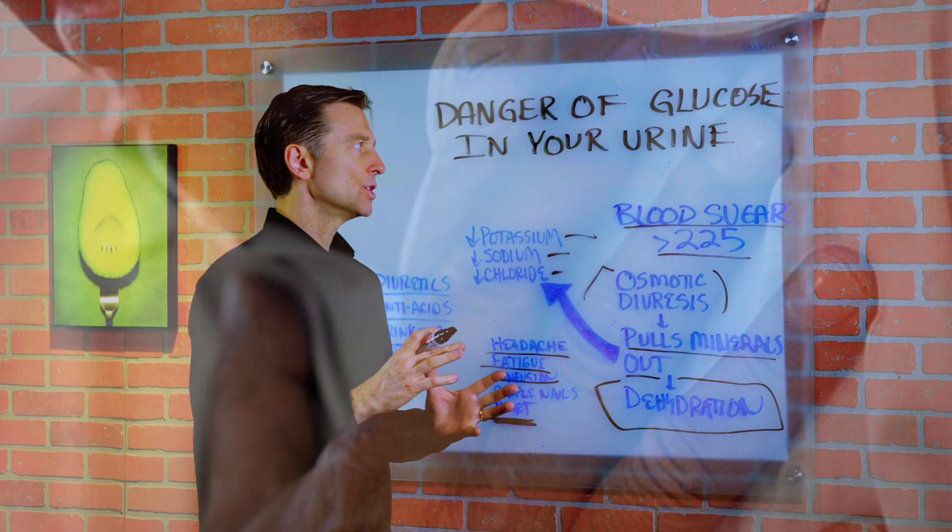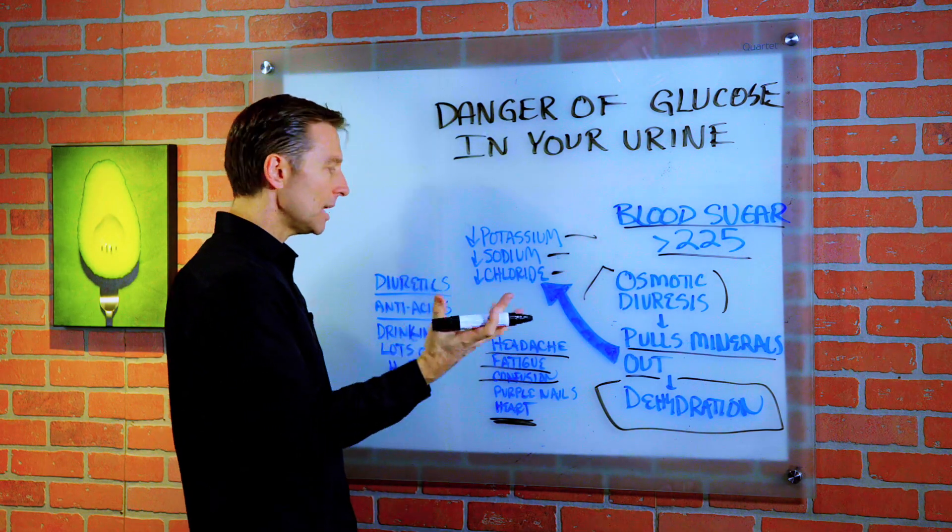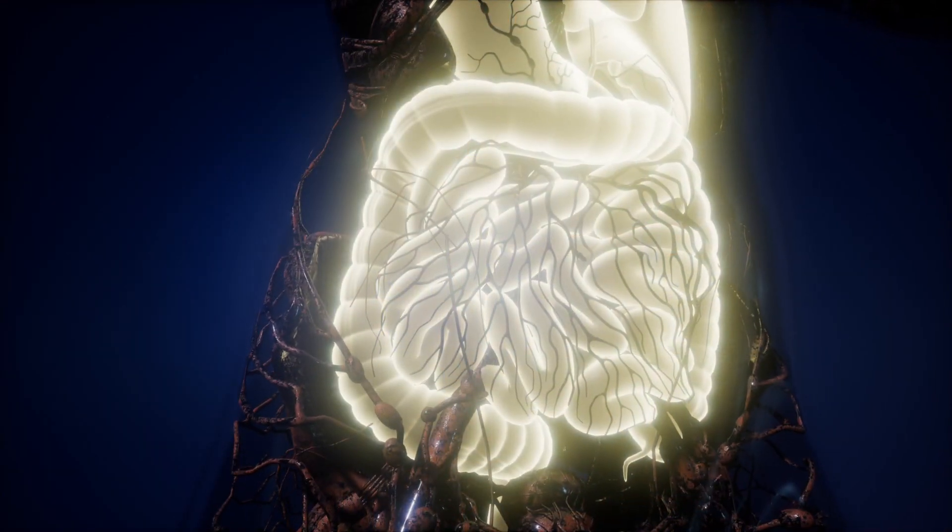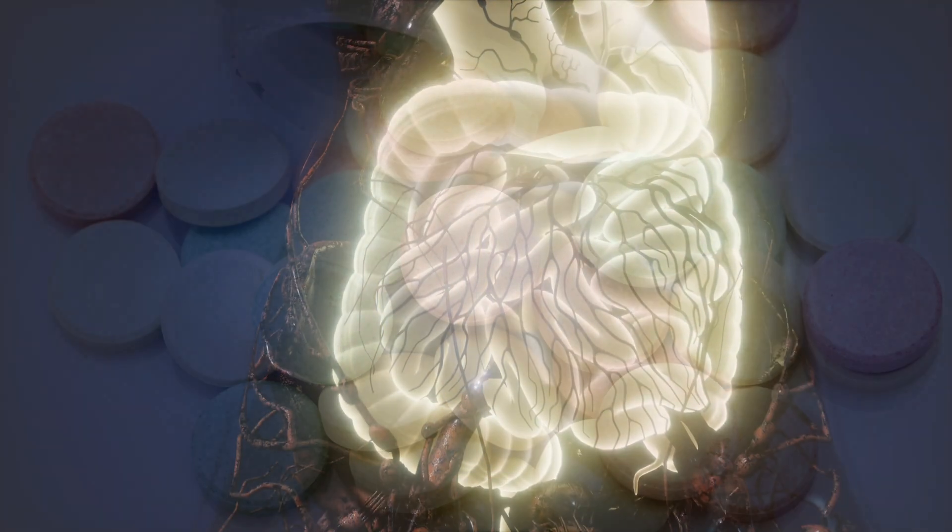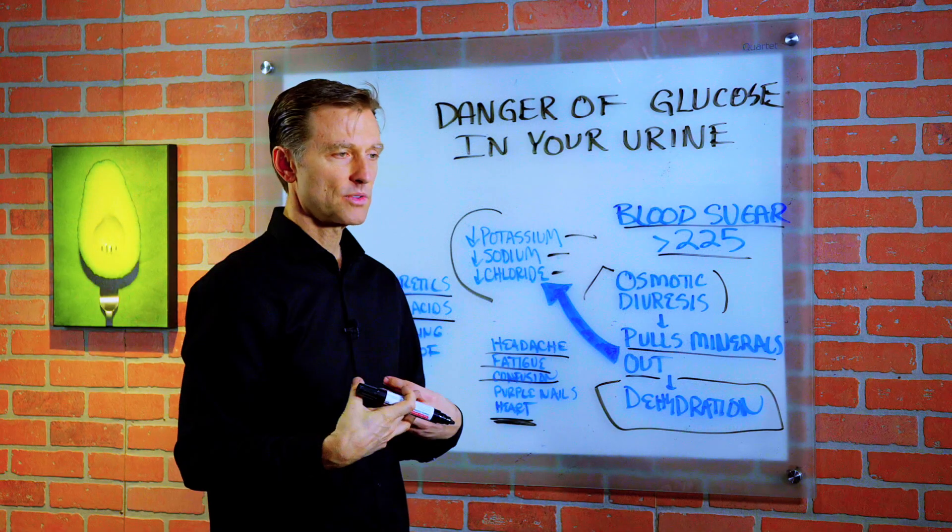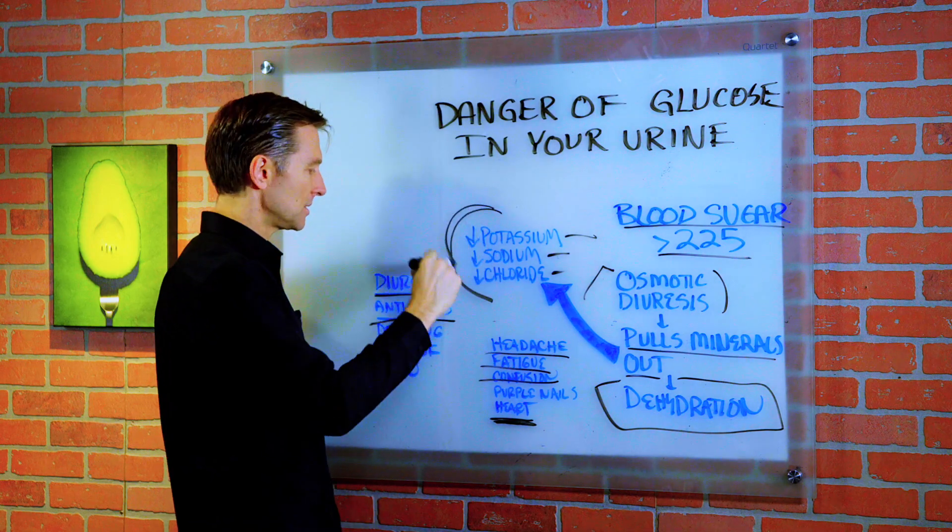Now, on top of that, usually a diabetic has high blood pressure and they're taking diuretics, which also pull out these electrolytes. And many times they also have digestive issues. They might be on some anti-acid, which also blocks the absorption of minerals from the stomach level. So we're going to actually have even less minerals.